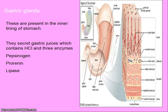Gastric glands are present in the inner lining of the stomach. They secrete gastric juices which contain HCL and three enzymes: pepsinogen, prorenine and lipases.